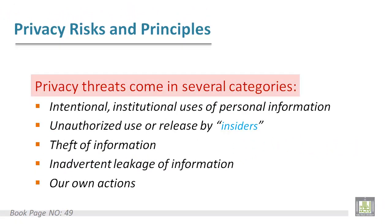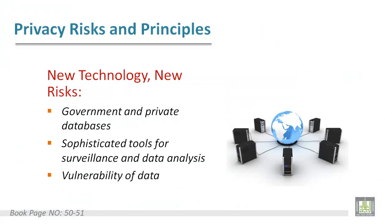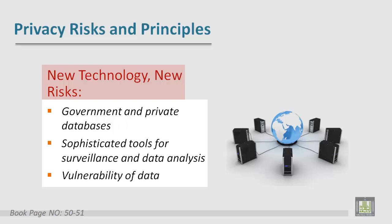Privacy threats come in several categories such as institutional uses of personal information, unauthorized use, theft of information, leakage of information, and our own actions. For example, we may give up some privacy in order to get some benefits.